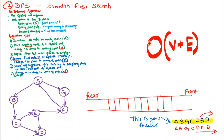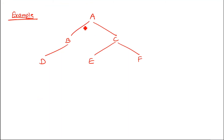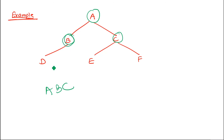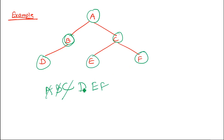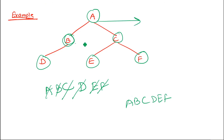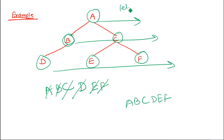The BFS traversal result for this graph is: A, B, G, C, F, E, D. The time complexity is O(V + E), where V is the total number of vertices and E is the total number of edges. For a simple tree, BFS visits nodes from left to right, level by level from level zero to level N — that is your breadth first search.